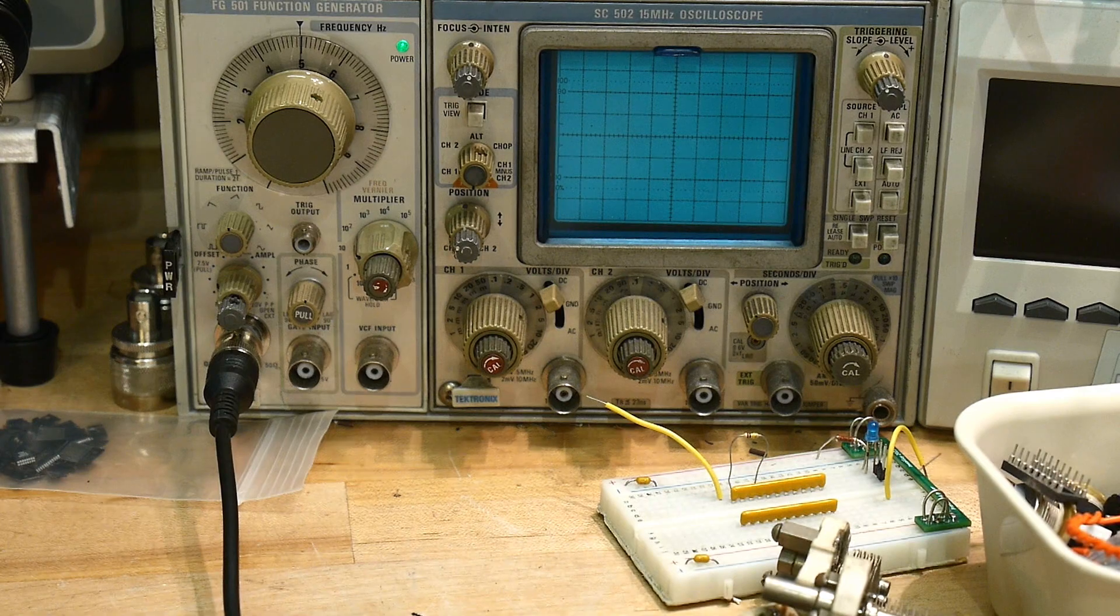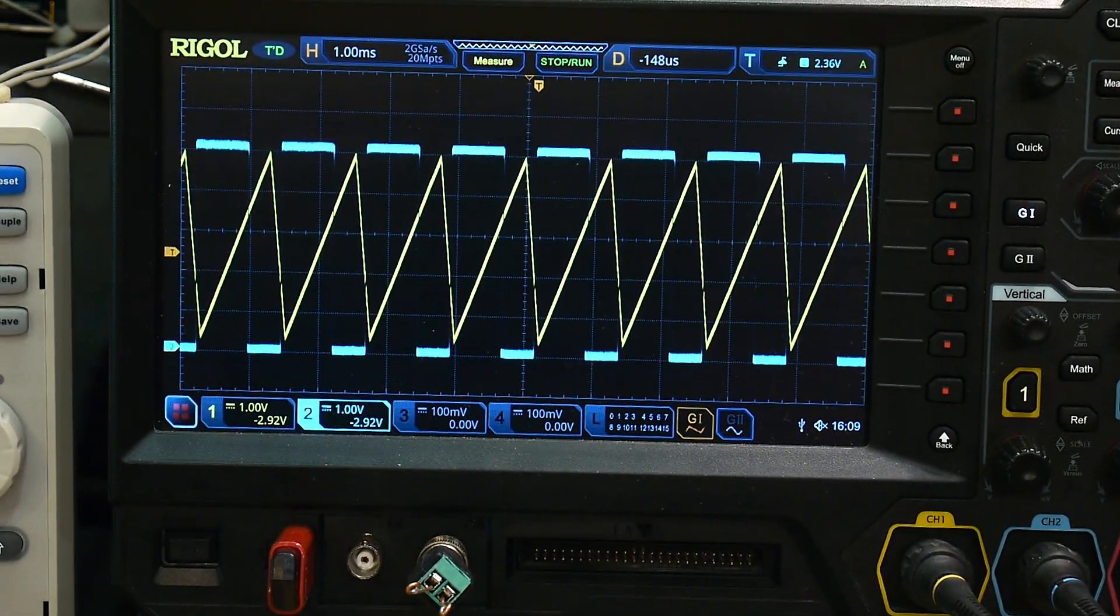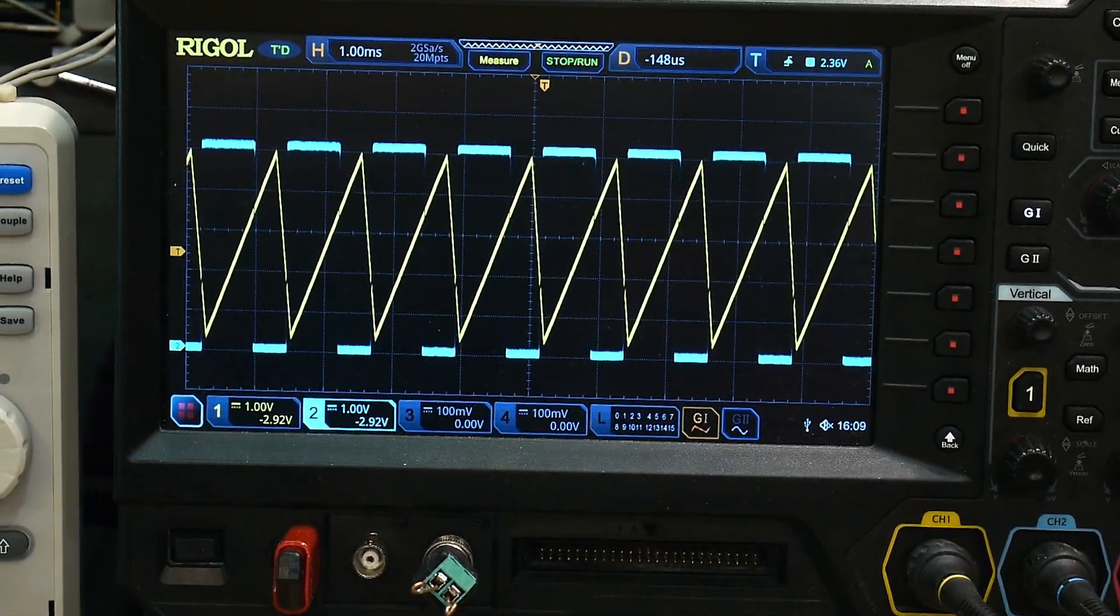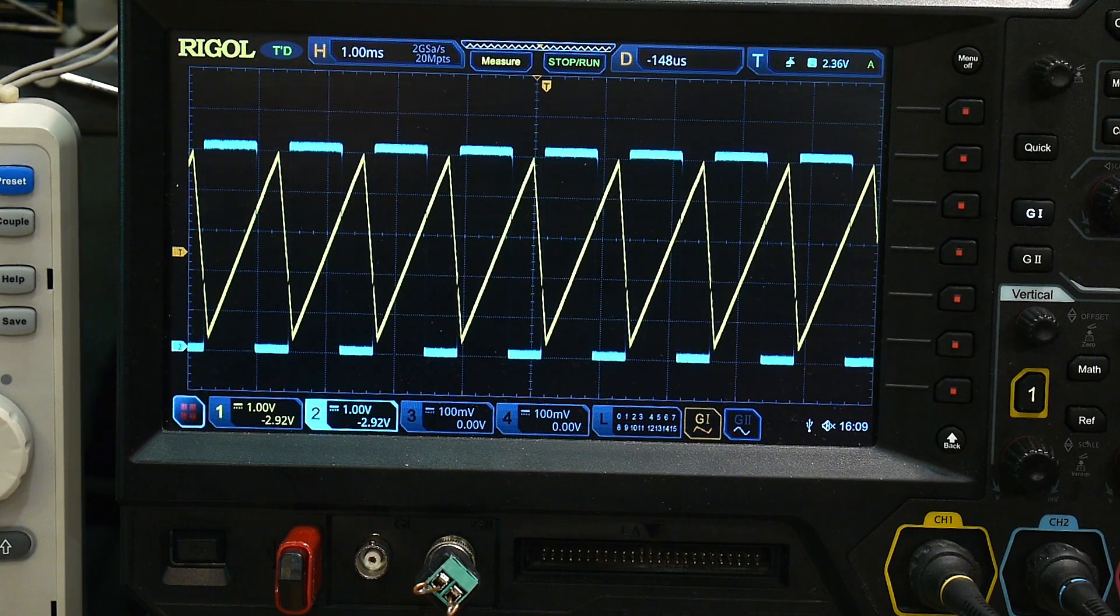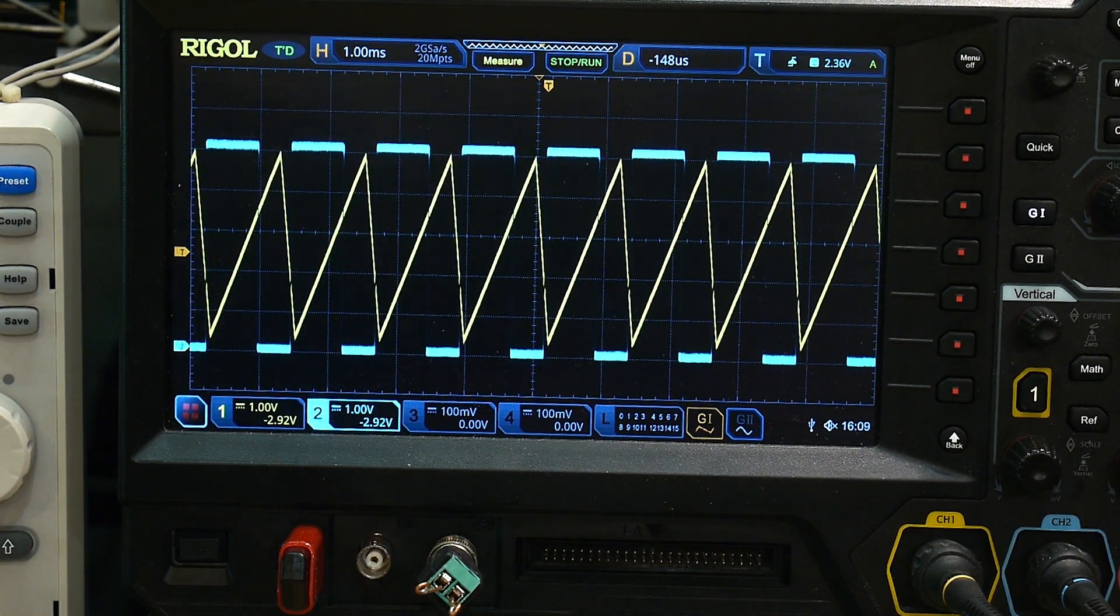So I have, I'm using the generator right here to generate a ramp. And the ramp goes in and that's on the yellow. And then the Schmitt trigger works on the cyan. So that's the output.